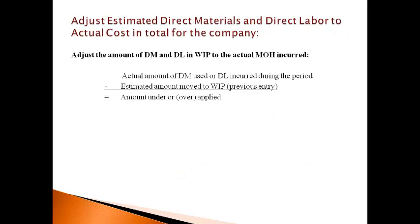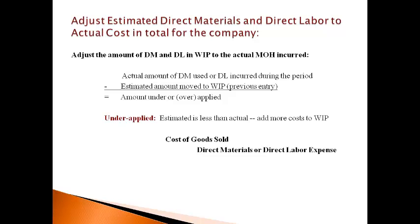The initial amount moved to work in process is the estimated cost of making products. An entry to adjust the estimated cost to the actual total cost for the company must then be made. Compare the actual amount of the cost incurred during the period to the estimated amount previously moved to work in process. The entry is made for the difference. Under-applied occurs when the initial amount moved to work in process was too low and more cost must be added.